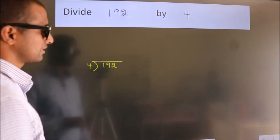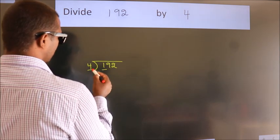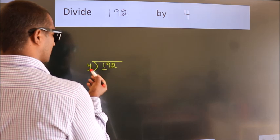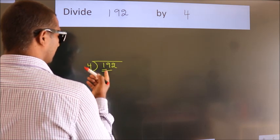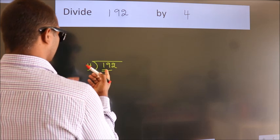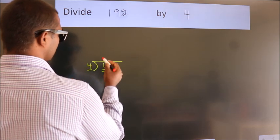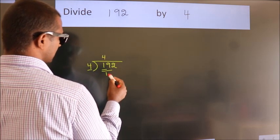Next, here we have 1, here 4. 1 is smaller than 4, so we should take 2 numbers: 19. A number close to 19 in the fourth table is 4 fours, 16.